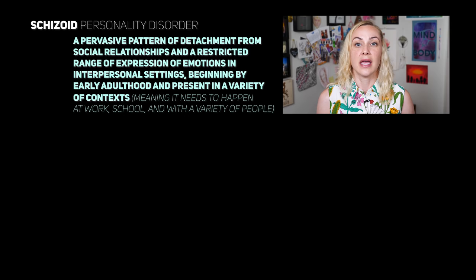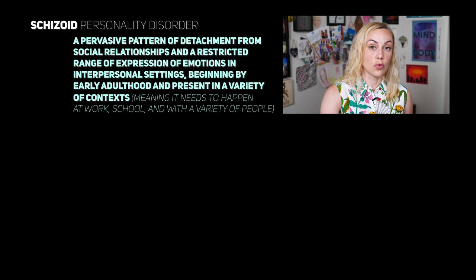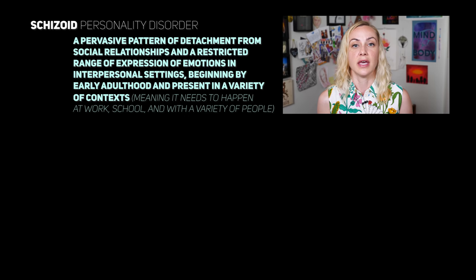To get into the actual diagnostic criteria — in other words, what we have to have in order to be diagnosed with Schizoid Personality Disorder — one must have a pervasive pattern of detachment from social relationships and a restricted range of expression of emotions in interpersonal settings, beginning by early adulthood and present in a variety of contexts, meaning it can happen at work, school, and with a variety of people. It has to be indicated by four or more of the following.